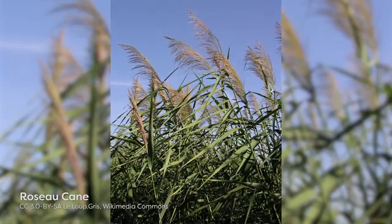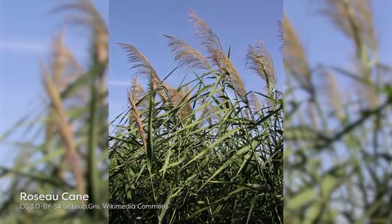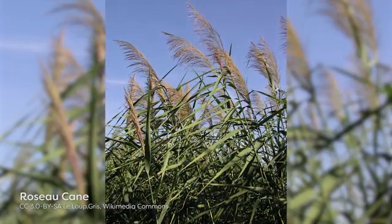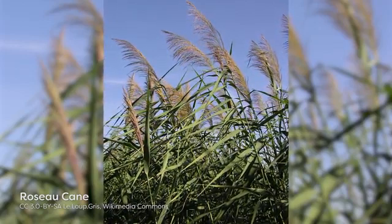Or if natural predators are not yet adapted to feed on the invasive species. A current ecological disaster in the Mississippi River Delta is the result of an invasive scale insect that feeds on roseau cane, a common marshland plant.